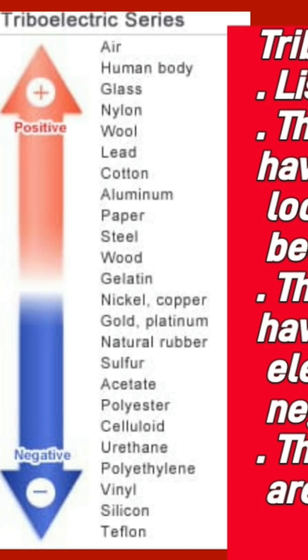Those near the bottom have more tendency to gain electrons, also called high electron affinity, and they become negative in charge. For example, silicon, teflon, ebonite, and rubber.